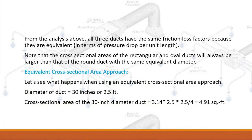From the analysis, all three ducts have the same friction loss factors because they are equivalent in terms of pressure drop per unit length. Note that the cross-sectional areas of the rectangular and oval ducts will always be larger than that of the round duct with the same equivalent diameter.